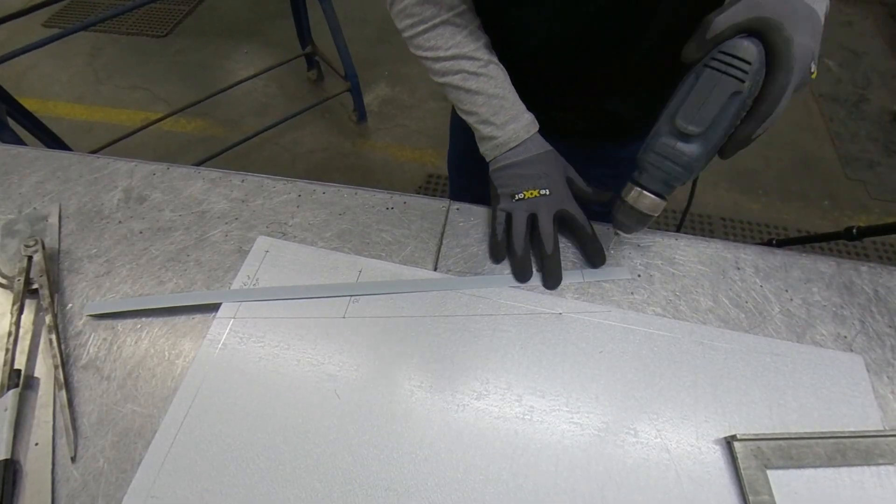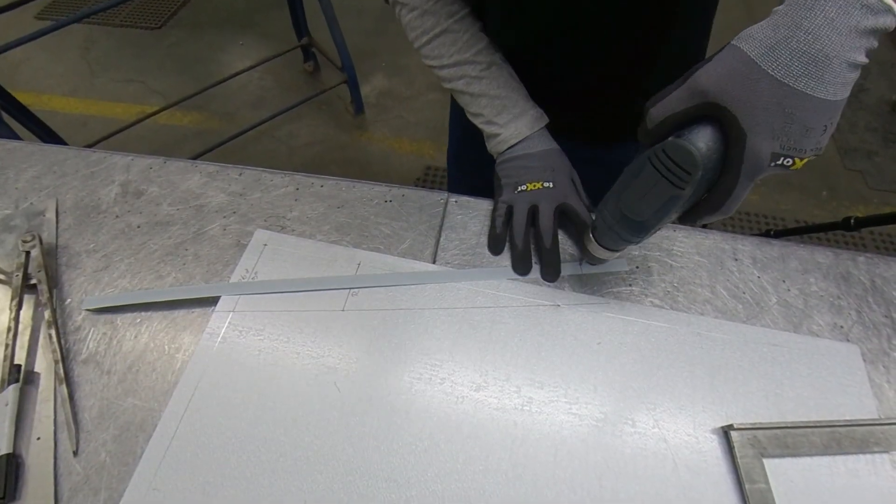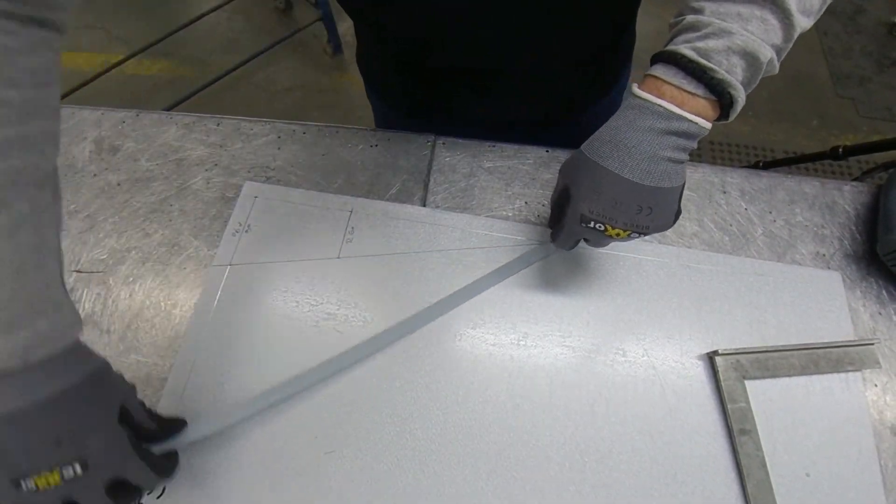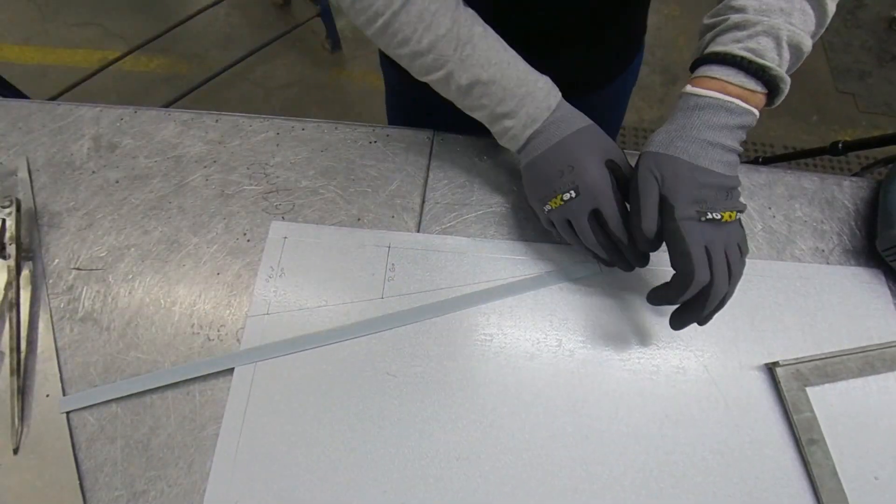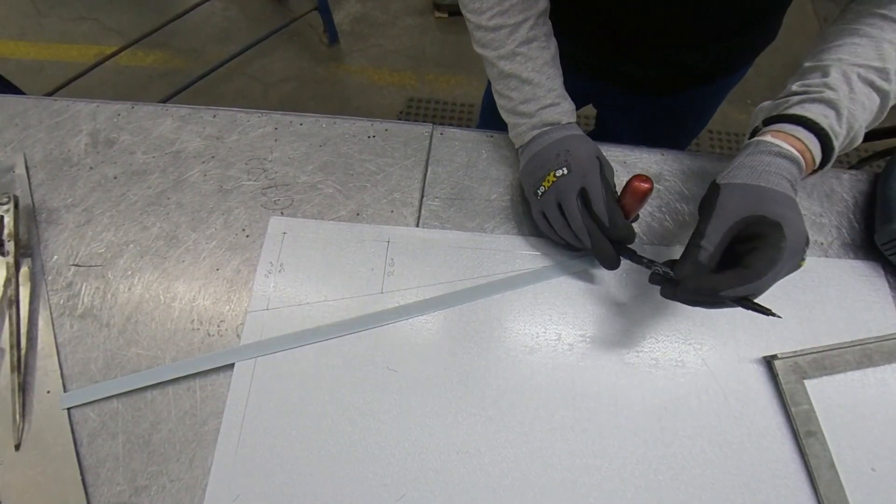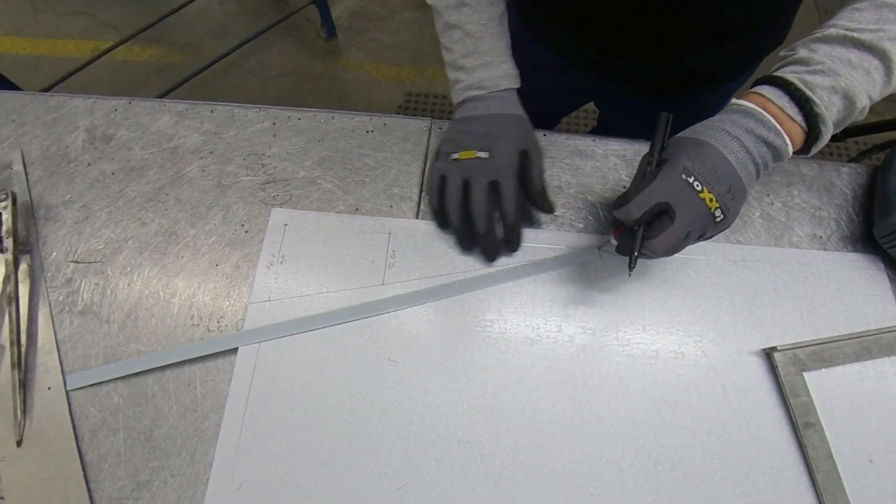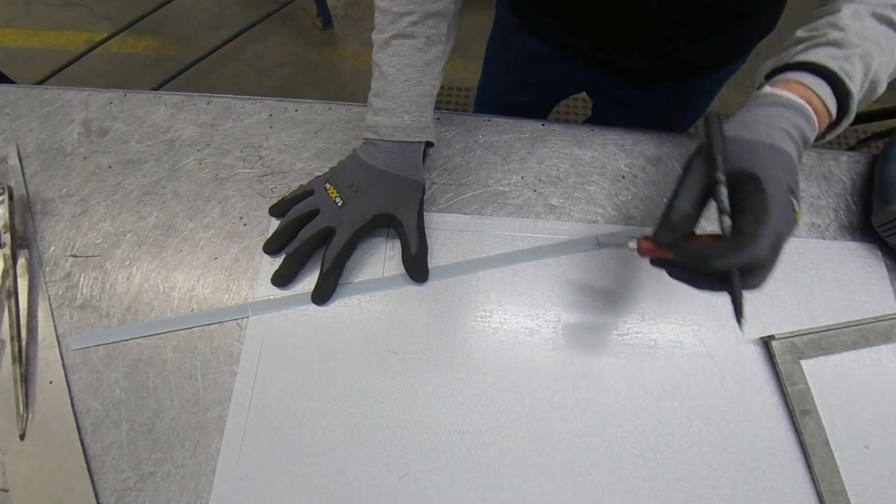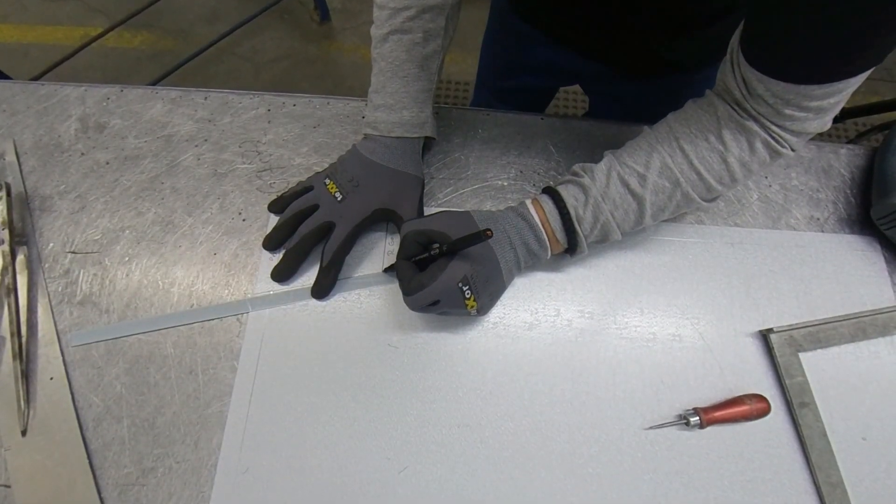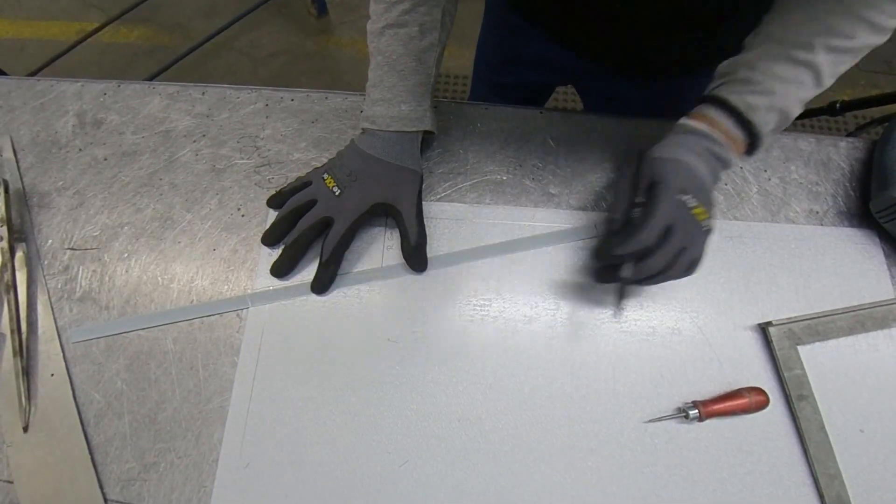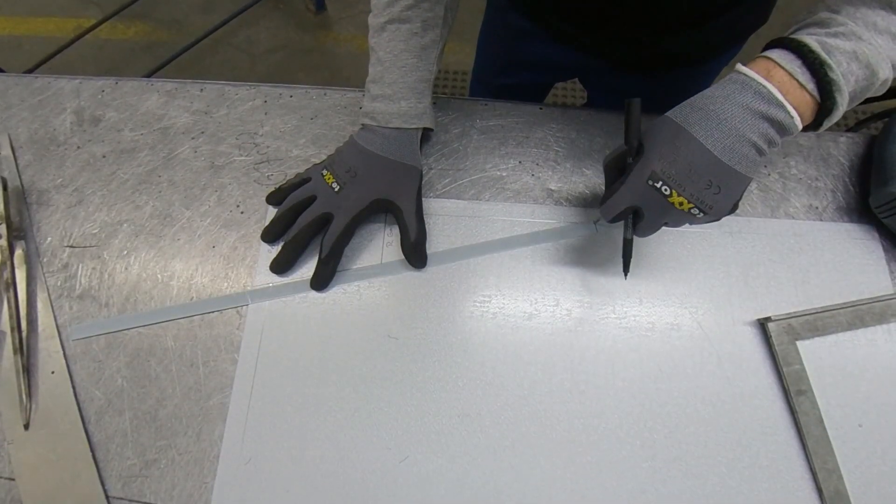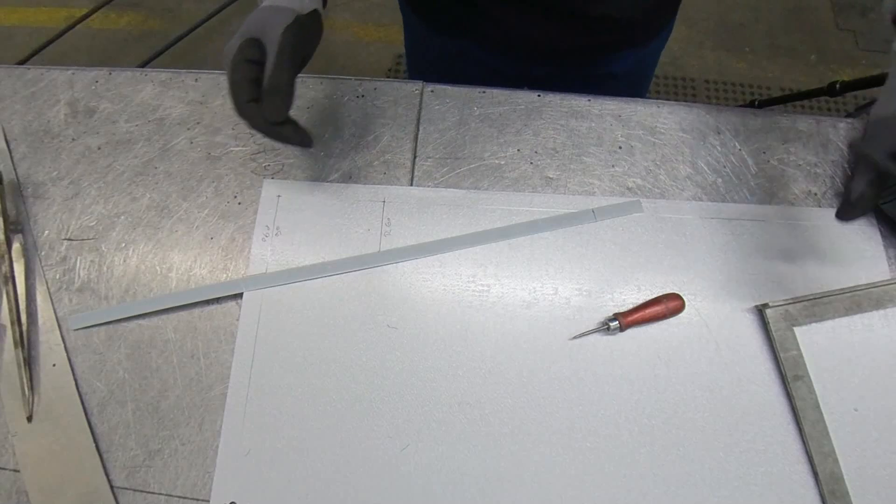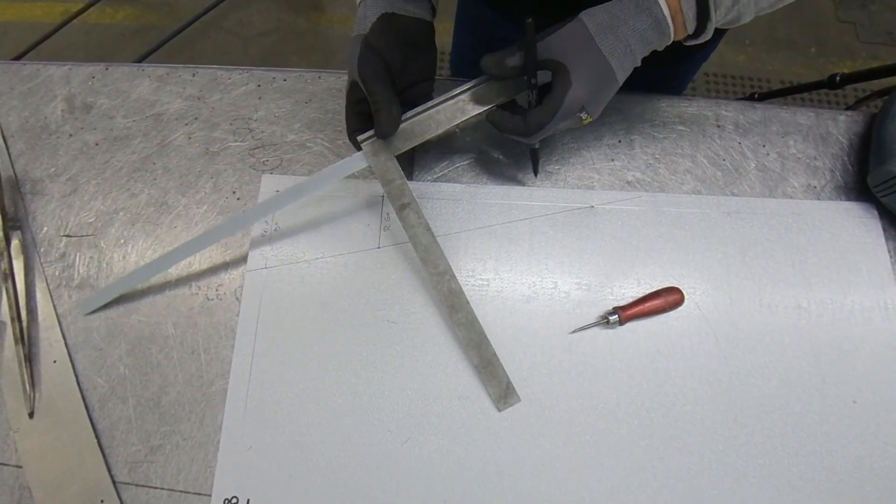I'm going to drill a hole in it here, a little bit. Now just holding this on the point, put this on the first line, and I'm going to mark it here. The other one is here. Same again.